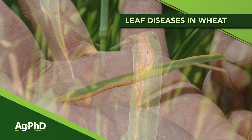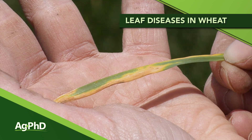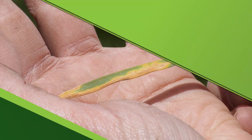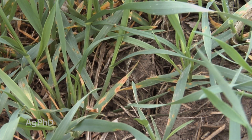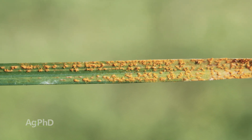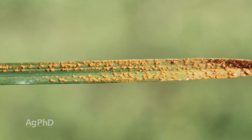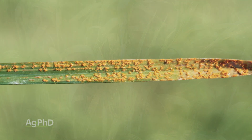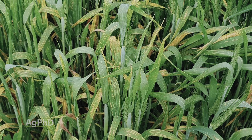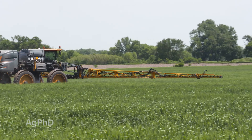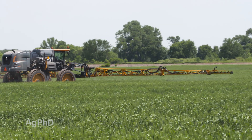Today we're going to spend a little time talking about leaf diseases in wheat, and it really depends on the time of year when we see some of these diseases. Very early on in the year it's tan spot; very late in the year we see a lot more rust species. Whatever the disease, what we really care about is: is it profitable to spray a fungicide? That's what we really want to get into today.